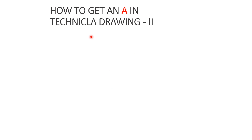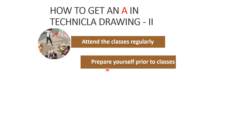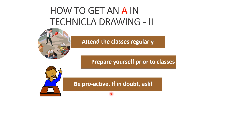Now, how to get an A in Technical Drawing 2: attend classes regularly, watch the lectures, recap and remember them. Prepare yourself prior to classes — before the start of class, make your mind ready about what you are going to study. Be proactive, and if you have any doubts or questions, ask.